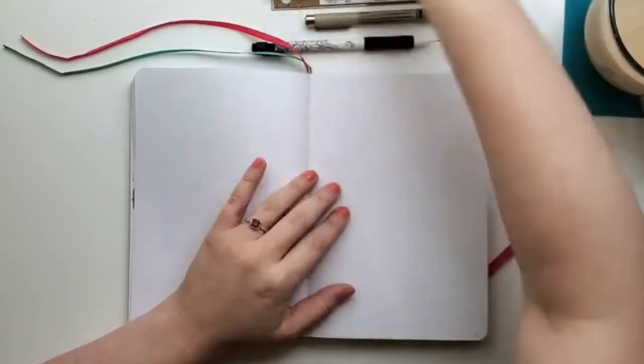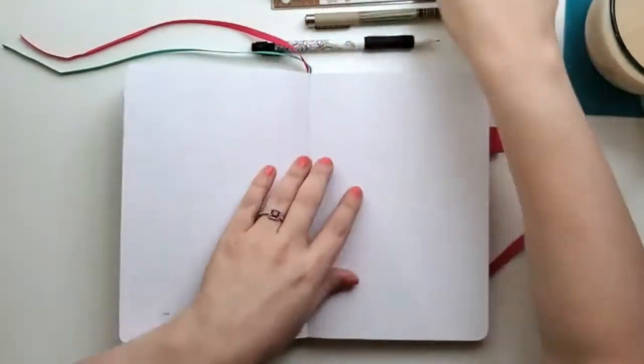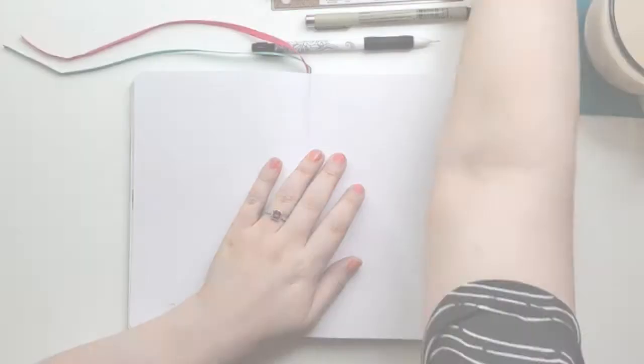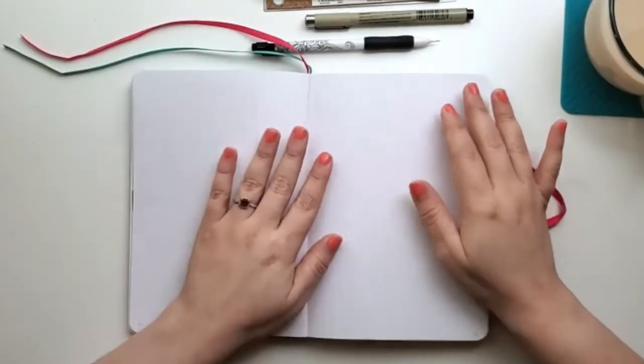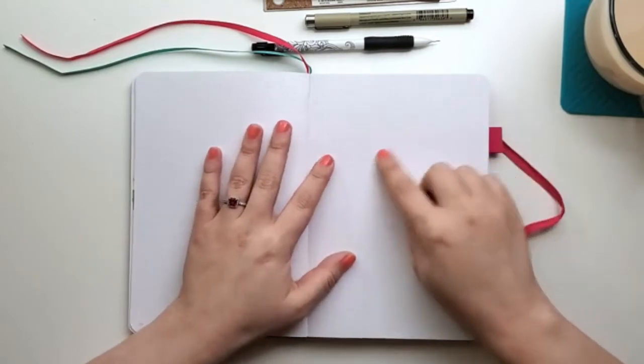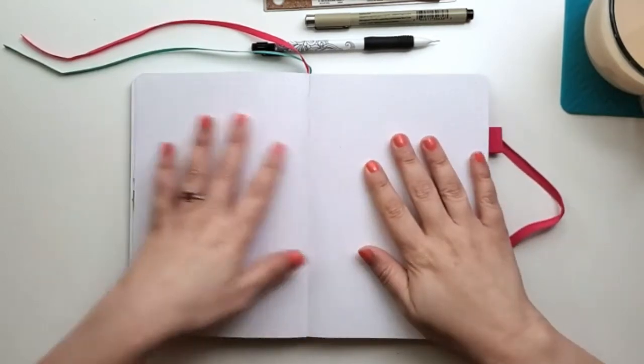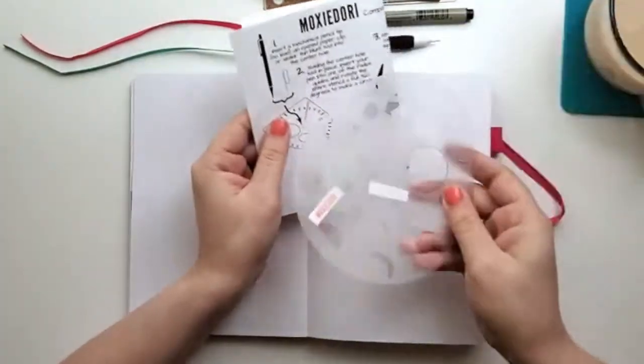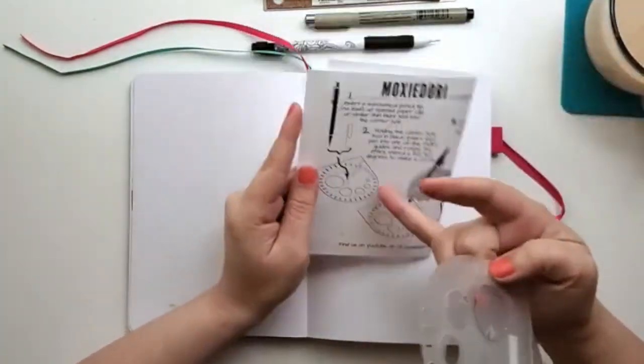But other than that, I have my laptop over there, so I'm going to be watching YouTube. So as I mentioned, I wanted to draw a circle tracker and I did get a stencil. I have two stencils from Moxie Dory and she gives a little how-to on it.